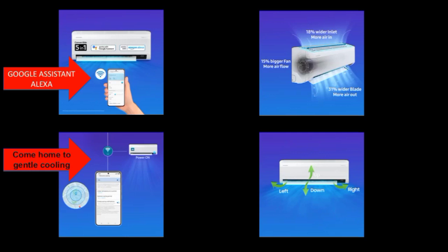Normally you can see a fan size in every AC. In this AC, Samsung has increased the fan size by 15%. If you have a bigger fan size, you get faster cooling. The airflow can be directed up, down, left, and right for better room cooling coverage.